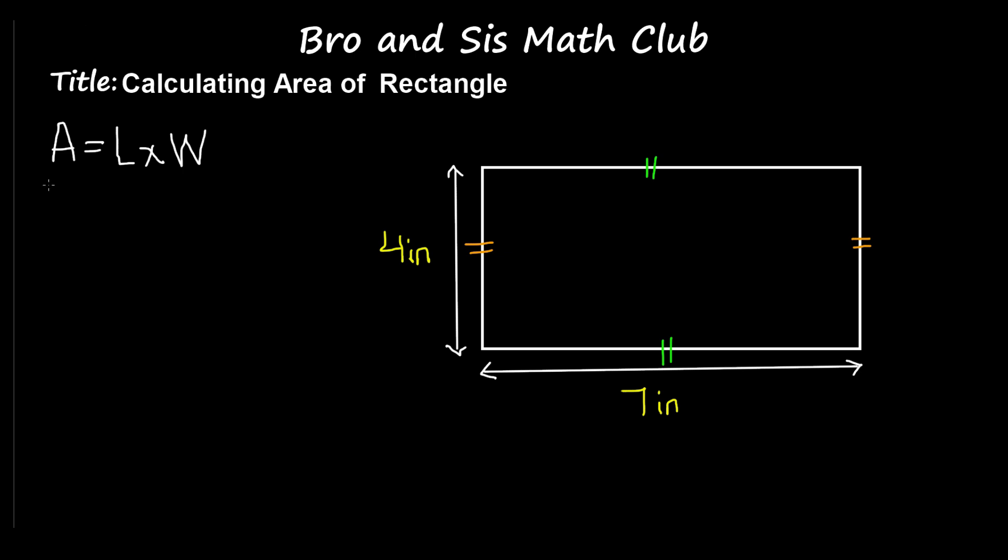So now we're going to multiply 7 times 4. So A, which stands for area, is equal to 7 times 4. We know that area is equal to 28 square inches.